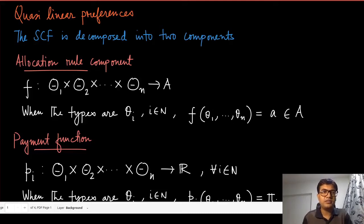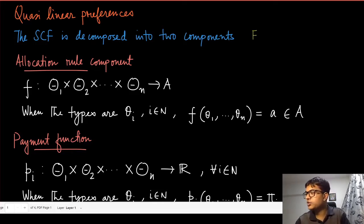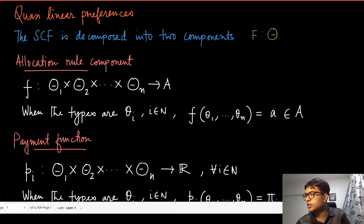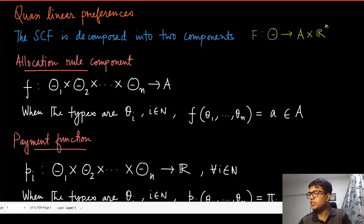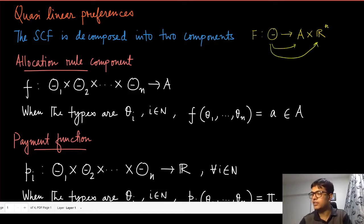In the quasi-linear domain, the social choice function can be decomposed into two components. This social choice function maps the Cartesian product of all type sets — the type profiles — into an outcome. The outcome has two components: the allocation component, which comes from the set A, and the payment component, which comes from R^n. We can decompose f into two parts: one function mapping theta into A, and another mapping theta into R^n. The first component is called the allocation rule.